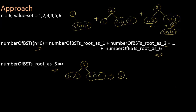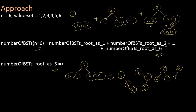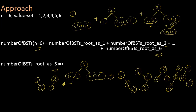For the right subtree with 4, 5, 6: we can keep 4 as root with 5 and 6 to the right in different combinations, then 5 as root with 4 and 6, and finally 6 as root with 4 and 5 to the left — giving 5 subtrees. For the left subtree with 1, 2: there are 2 subtrees possible. Notice that any of these 5 right subtrees could be combined with any of these 2 left subtrees to form a unique BST with root as 3. So total BSTs with root as 3 is 2 × 5 = 10.